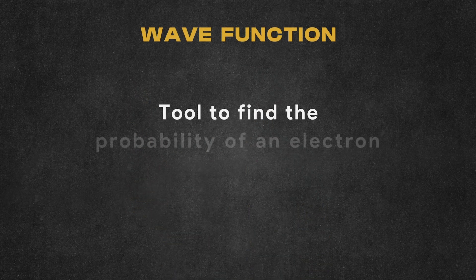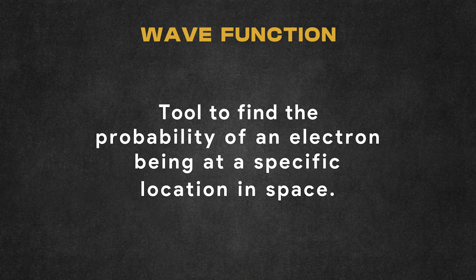The fork-like symbol you see here is the wave function, a tool to find the probability of an electron being at a specific location in space.